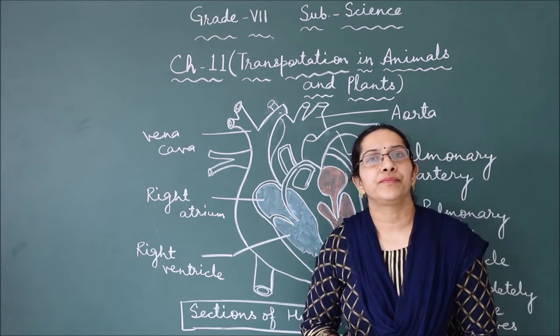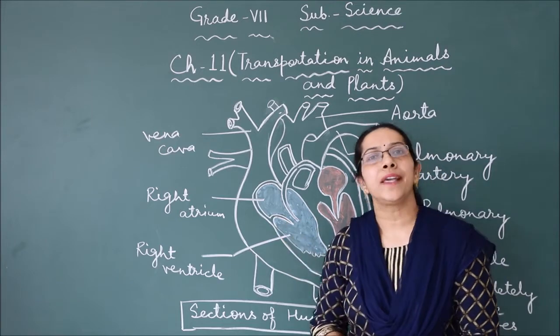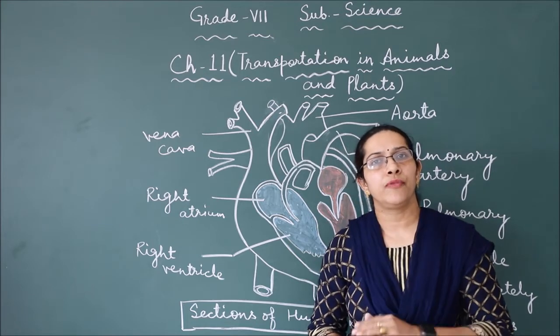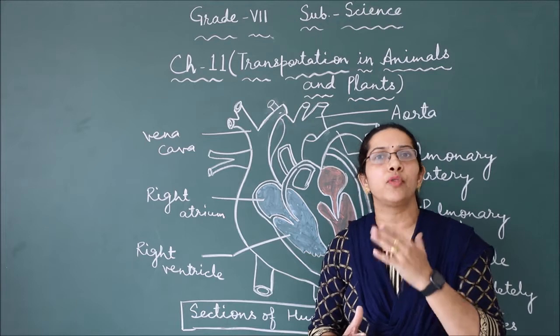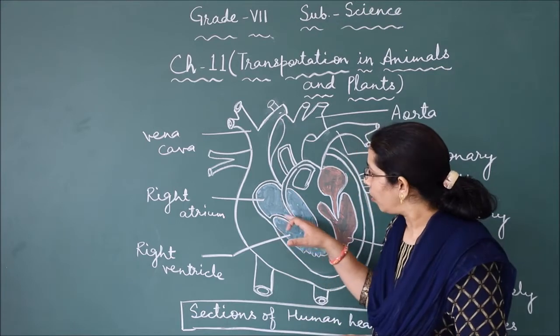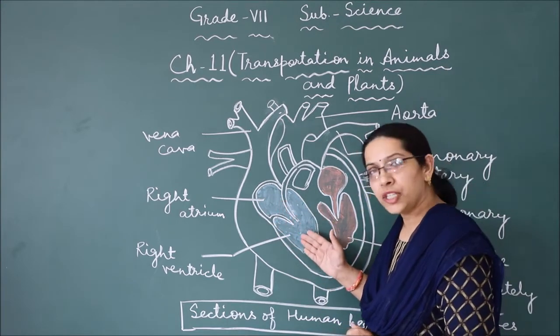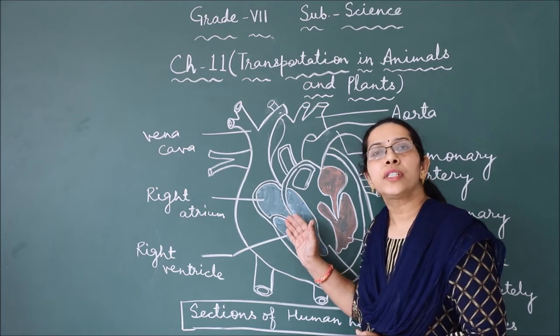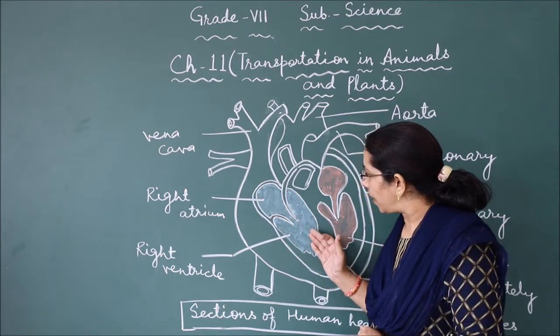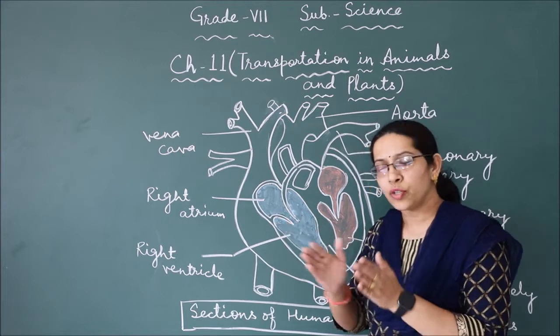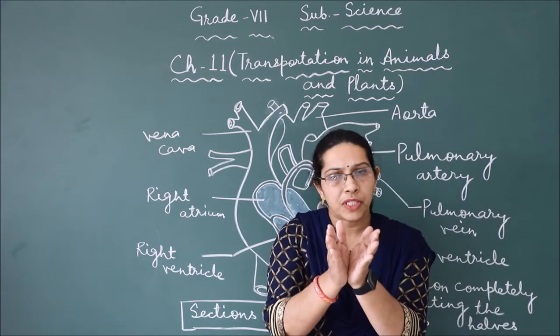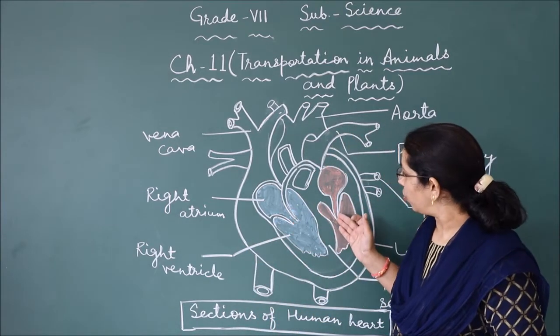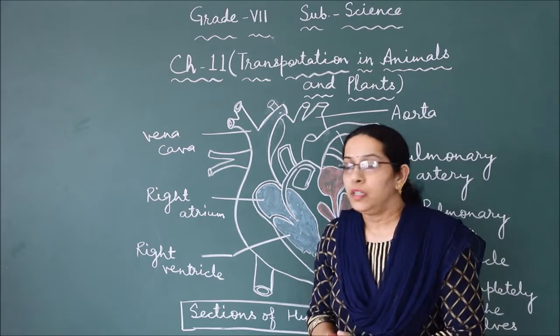Here you can see there are walls. Between the right atrium and right ventricle is the tricuspid wall, and between the left atrium and left ventricle is the bicuspid wall. These walls stop the backflow of blood. If there is backflow, the valve will close to prevent blood from flowing in the wrong direction.